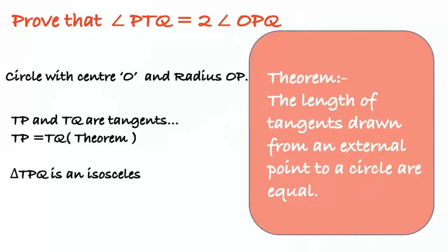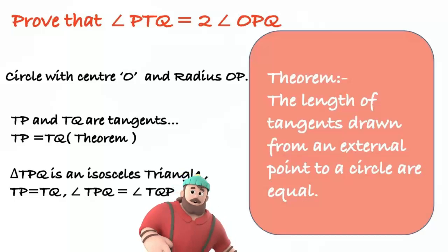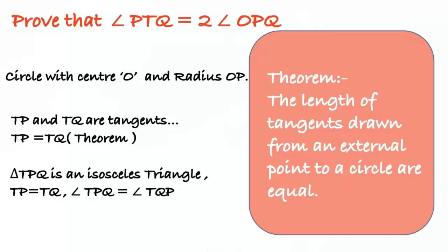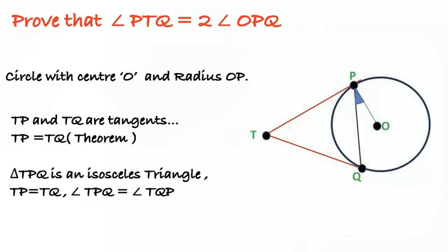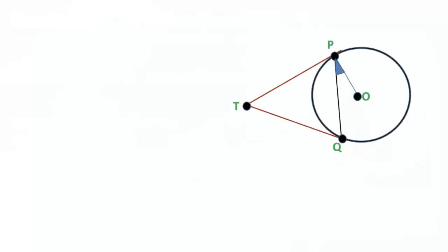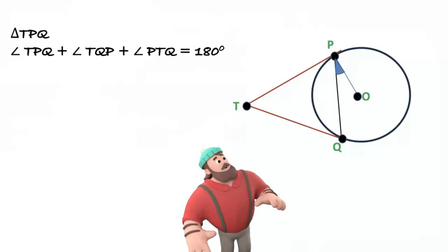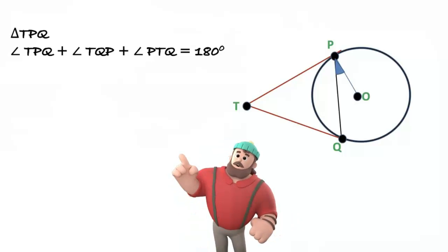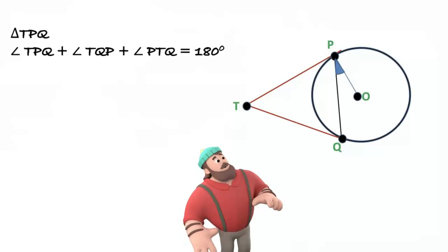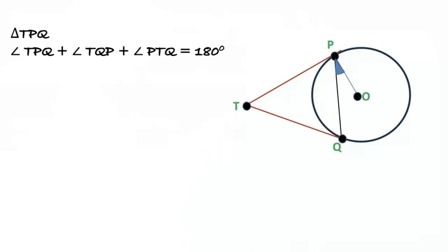Since TP equals TQ, triangle TPQ is an isosceles triangle, so angle TPQ equals angle TQP — angles opposite to equal sides of an isosceles triangle are equal. In triangle TPQ: angle TPQ plus angle TQP plus angle PTQ equals 180 degrees.